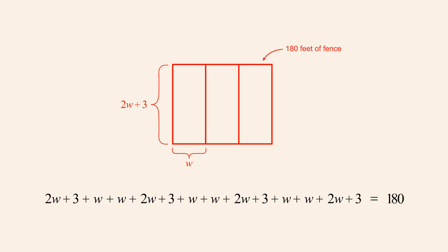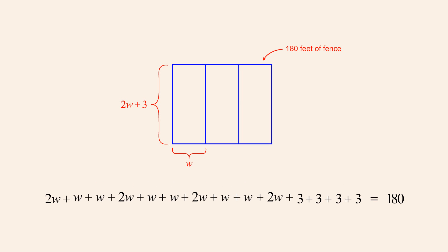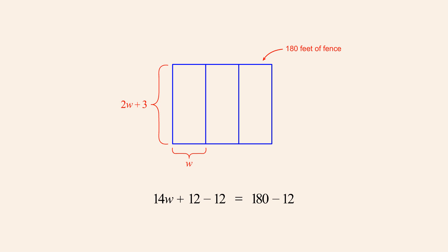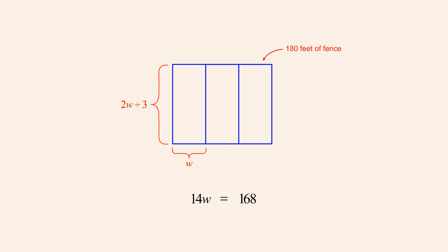Collecting like terms, we group all the terms containing w together on the left. We then add these terms to get 14w and add the four threes to get twelve. Since we want an equation with w alone on the left side, we subtract twelve from both sides, allowing us to cancel the positive and negative twelves on the left. Completing the arithmetic on the right, one hundred eighty minus twelve is one hundred sixty-eight. To eliminate the coefficient fourteen, we divide both sides by fourteen, allowing us to cancel the fourteens in the numerator and denominator. Completing the arithmetic on the right, one hundred sixty-eight divided by fourteen is twelve.